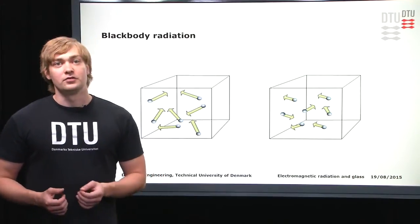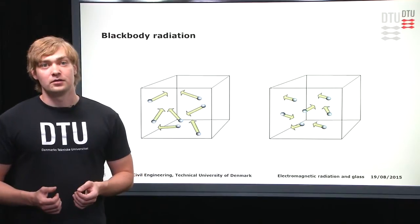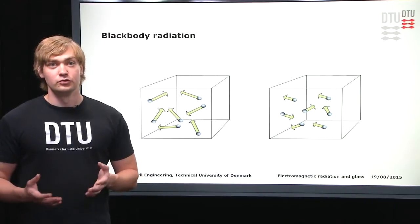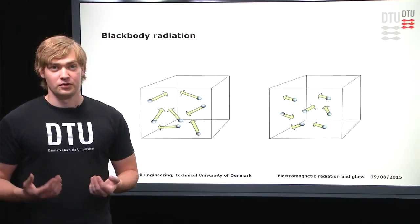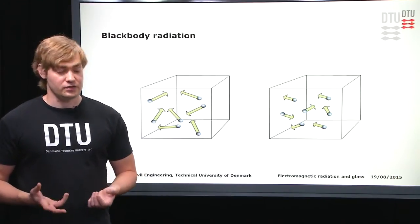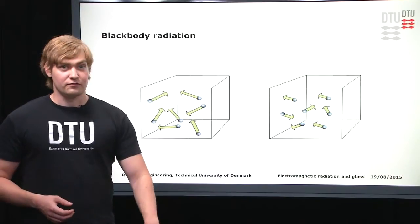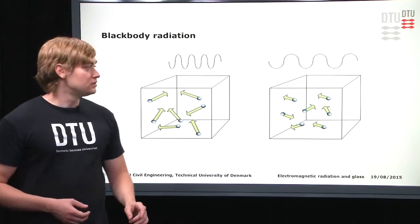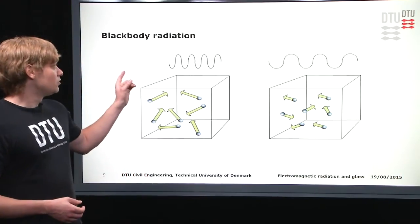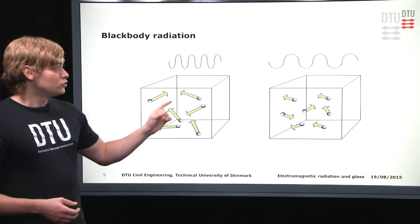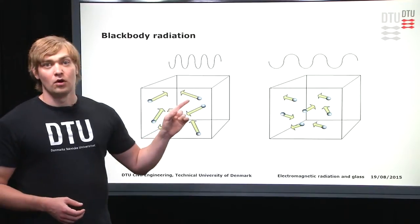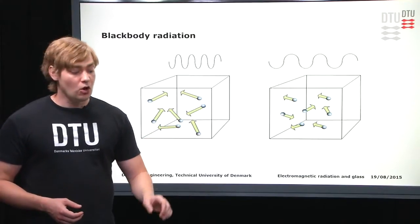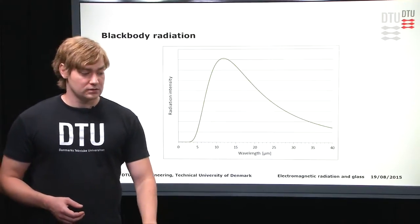Blackbody radiation comes from particles moving around in matter due to the temperature that matter has. Fast particles means short wavelengths; slow particles or low temperatures means long wavelengths.